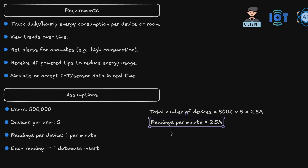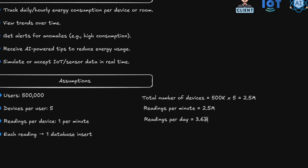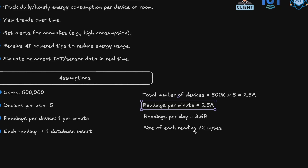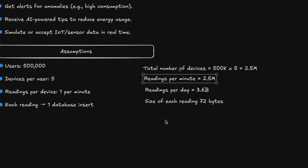So we've got 2.5 million readings per minute. Readings per day is approximately 3.6 billion rows per day. For storage, let's assume each reading has an ID, a device ID, kilowatts used, and a timestamp — about 32 bytes per row. With 2.5 million devices, storage per day equals 3.6 billion × 72 bytes, which is approximately 259 gigabytes per day.